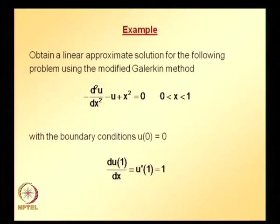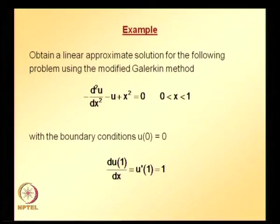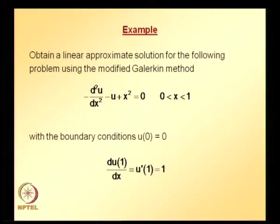For a second-order differential equation, boundary conditions of order 0 to p−1 are essential, and those of order p to 2p−1 are natural. Here the order is 2, so 2p = 2, meaning p = 1. Boundary conditions of order 1 are natural. Therefore, the second boundary condition is the natural boundary condition. We are going to use the modified Galerkin method.